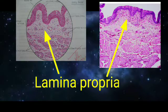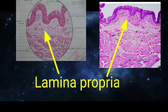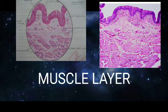Next to the lining epithelium in the mucosa, we can appreciate the lamina propria. The lamina propria is made up of moderately dense connective tissue, and there will be occasional lymphatic nodules and tiny blood vessels with lymphatics.